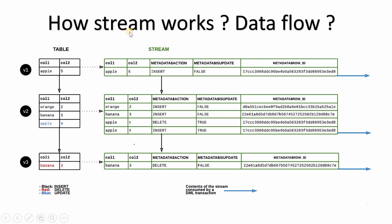Now let's understand how stream works and the data flow — this is a very important diagram for understanding the streams concept. There are three versions shown: V1 stream, V2 stream, and V3 stream. Let's first understand the index: black indicates insert, blue indicates update, and red indicates delete.